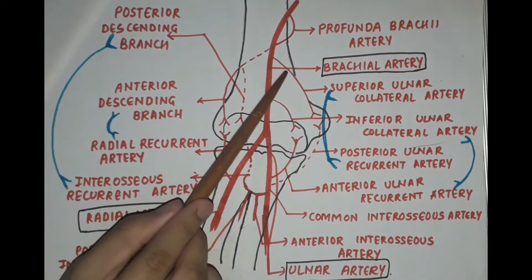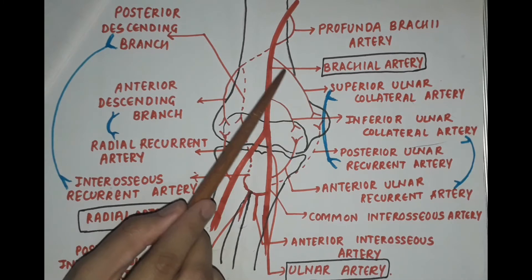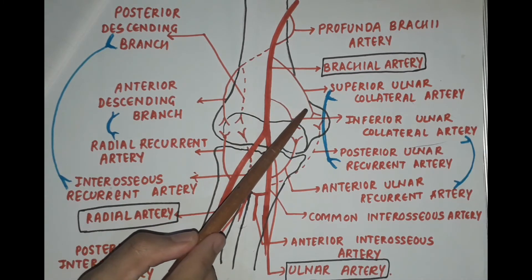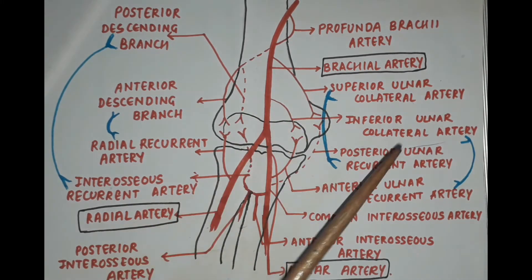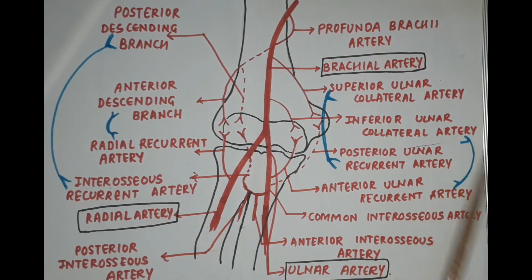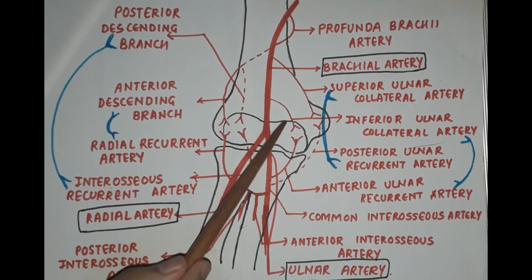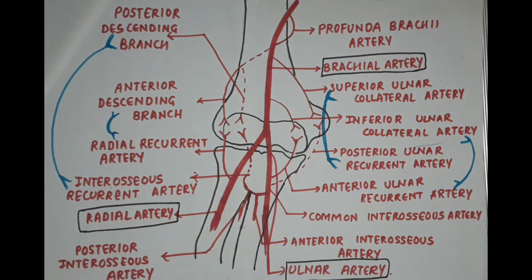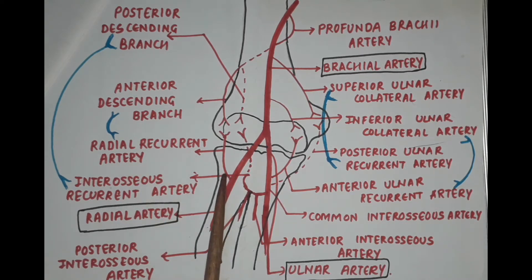The second branch is the superior ulnar collateral artery, and the third branch is the inferior ulnar collateral artery.